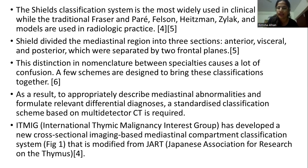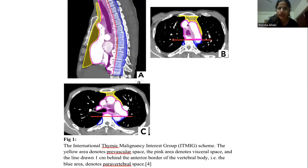As a result, to appropriately describe mediastinal abnormalities and formulate relevant differential diagnoses, a standardized classification based on MDCT is required. The ITMIG — that is the International Thymic Malignancy Interest Group — has developed a new cross-sectional imaging-based mediastinal compartment classification system, modified from JART, the Japanese Association for Research on the Thymus. In this ITMIG scheme, the yellow area denotes the prevascular space, the pink area denotes the visceral space, and the blue area — drawn one centimeter behind the anterior border of the vertebral body — denotes the paravertebral space.